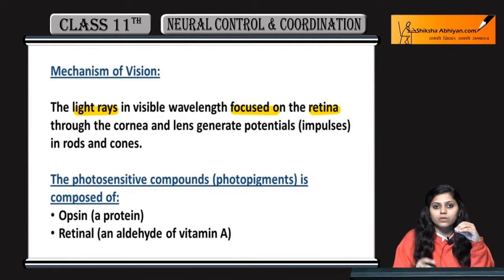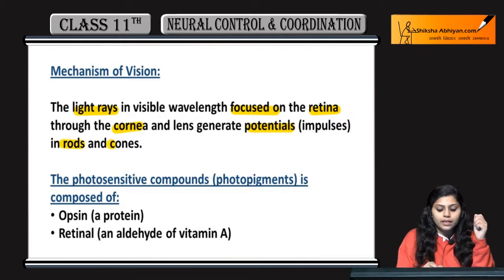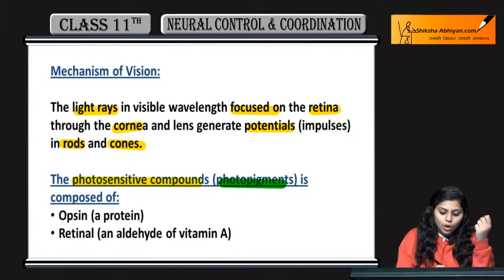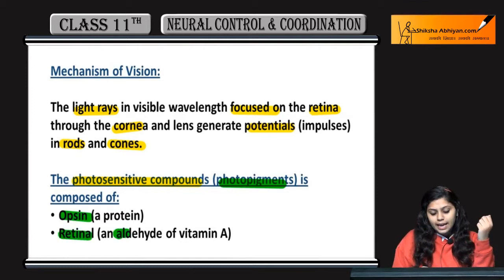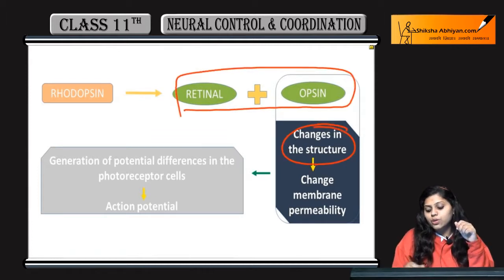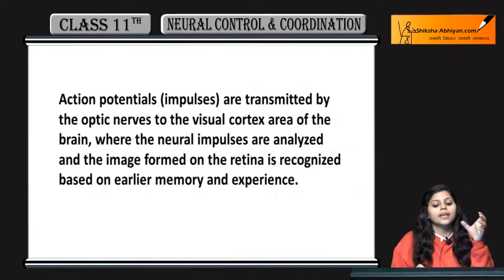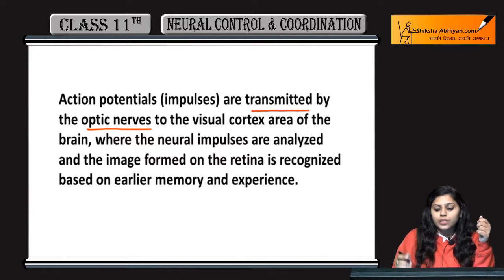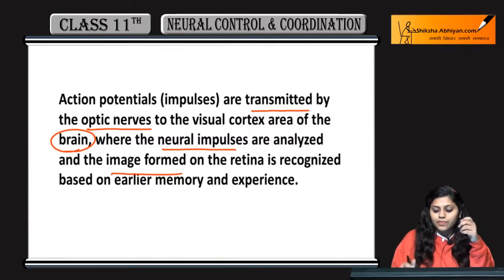Vision is possible when light rays of visible wavelength focus on the retina through the cornea and lens. This generates impulses in the rods and cone cells via photosensitive compounds — the photo pigments, which are made of protein and retinal. Retinal is an aldehyde derivative of Vitamin A. From rhodopsin, retinal and opsin are formed. A structural change in opsin changes membrane permeability, generating an action potential. This impulse is transmitted by the optic nerve to the visual cortex area of the brain, where neural impulses are analyzed and images formed on the retina are recognized.